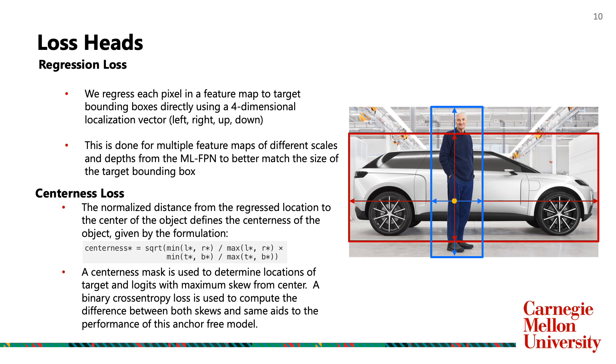A third head called centerness head has been added in this model. This is a measure of the centerness of the positive sample location inside the bounding box. This is added to improve the performance of anchor-free detectors and bring them at par with anchor-based detectors. A centerness mask is used to determine the locations of target and logits with maximum skew from center. I will now hand over the presentation back to Shiree.